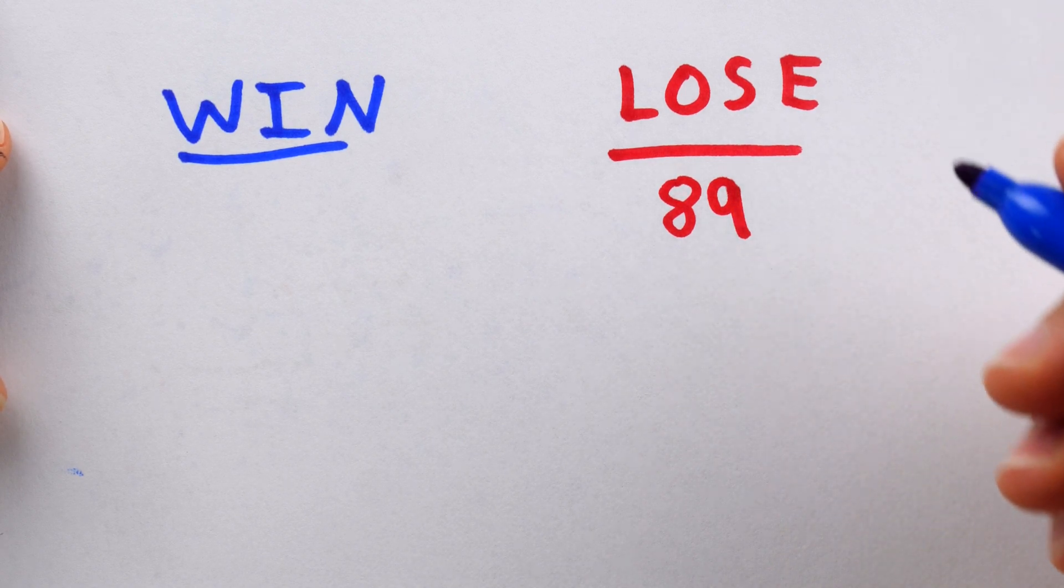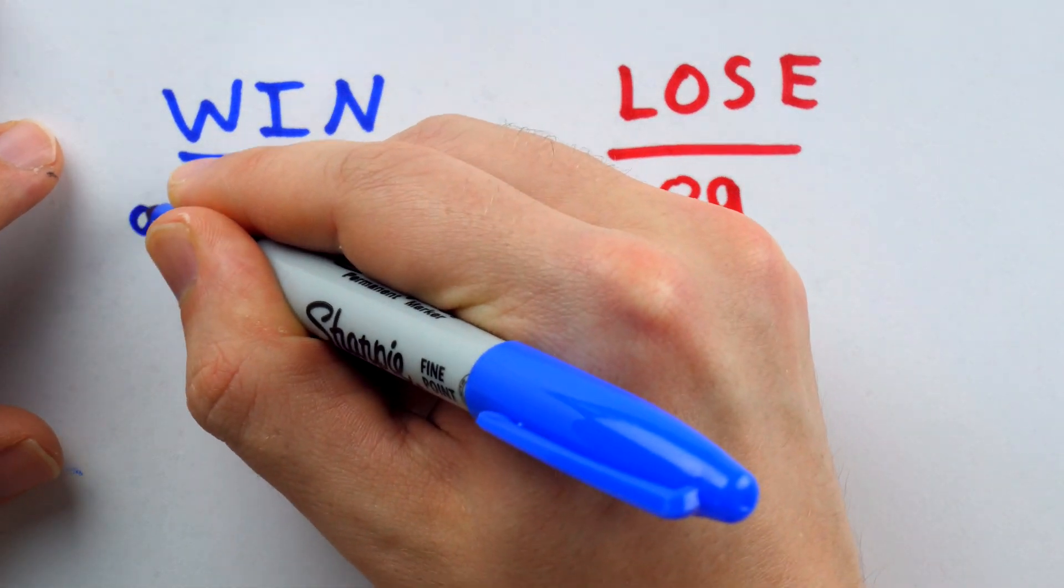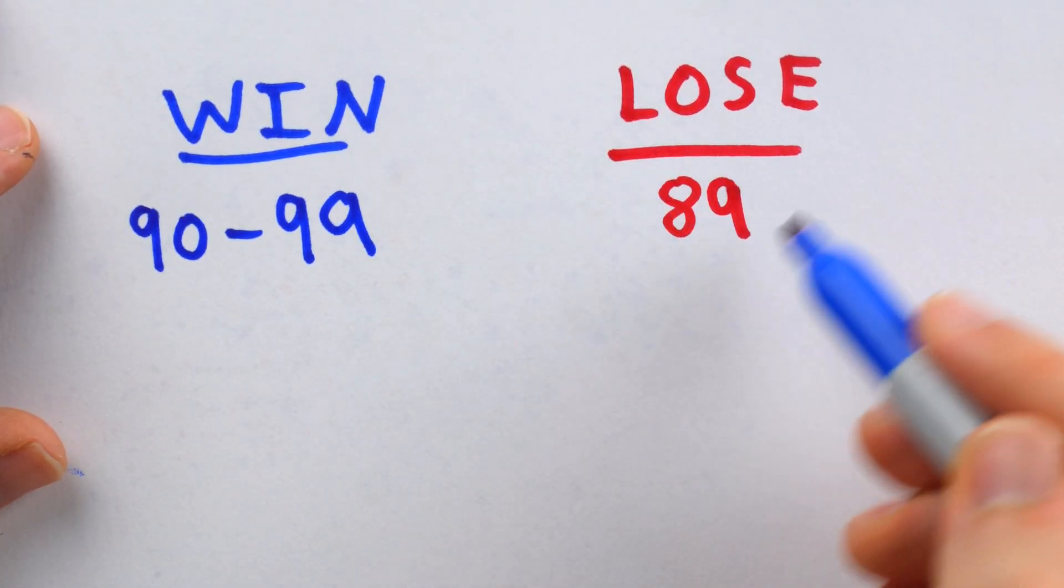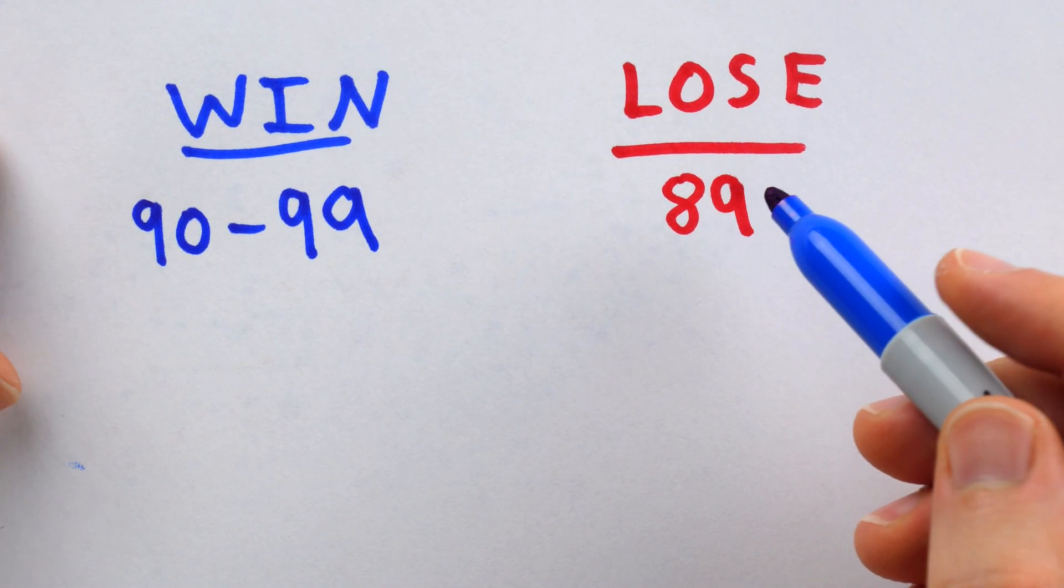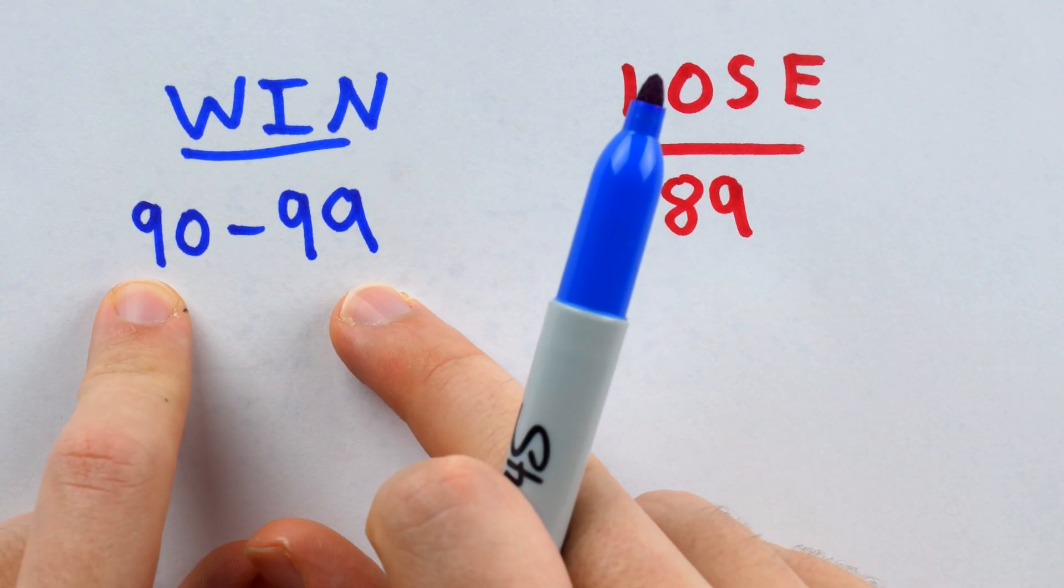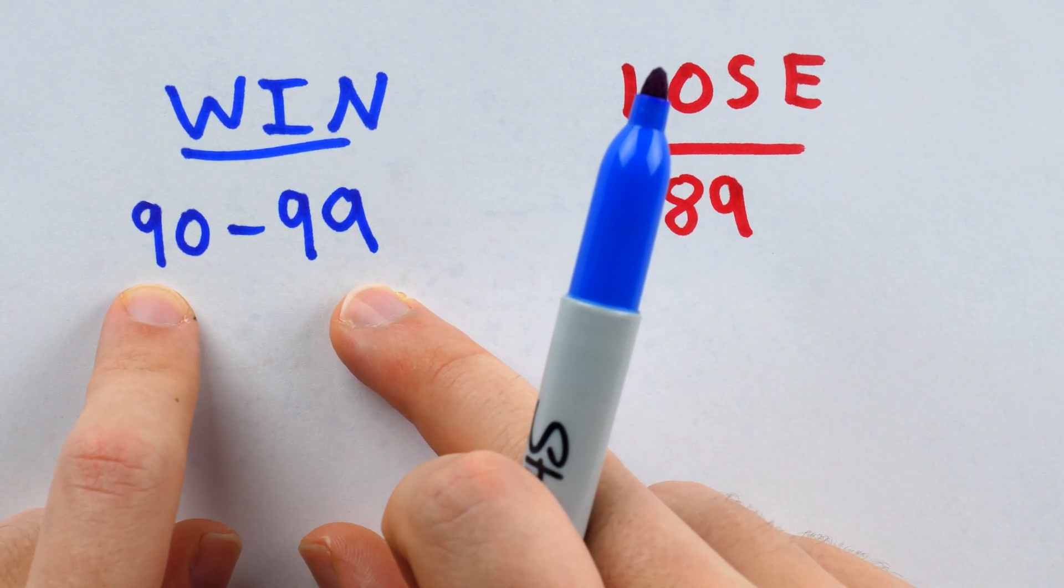And the reason this is a losing position is because all of the possible subsequent positions, namely, everything from 90 to 99, those are all winning positions. A player who has 89 as their current subtotal is guaranteed to move the game into one of these positions, where the player whose turn it is can then win.